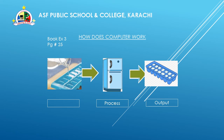Here we have another example. Book exercise number 3, page number 25. In this exercise, you have to fill in the blank with input, output, or process. As you can see the picture: in the ice cube box, what will it do in the fridge? It will freeze. And what will be the result? We will get the ice cubes.